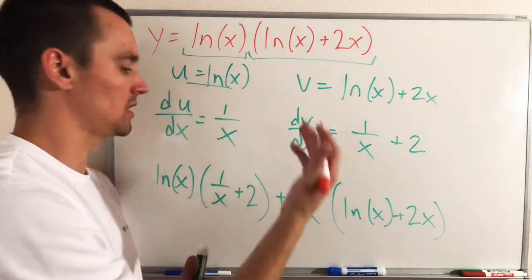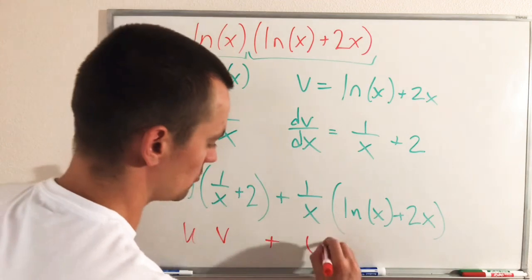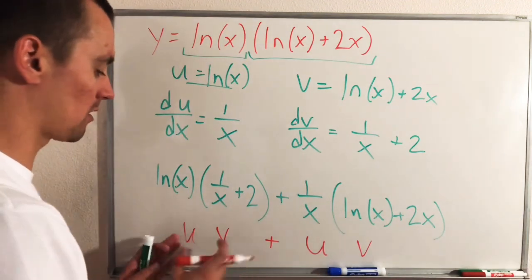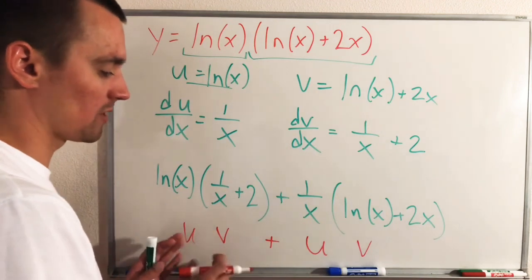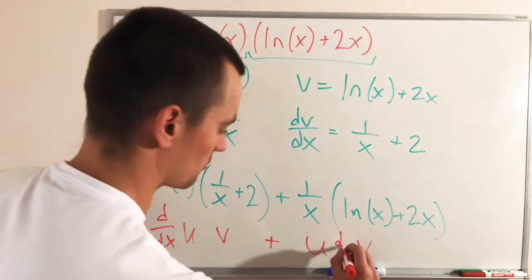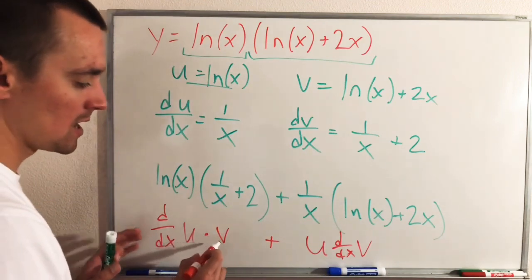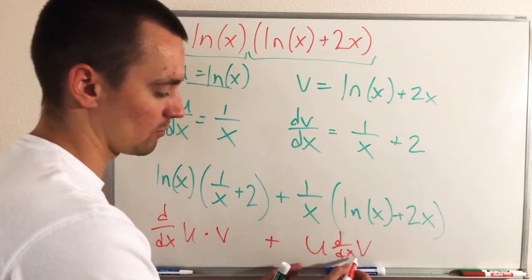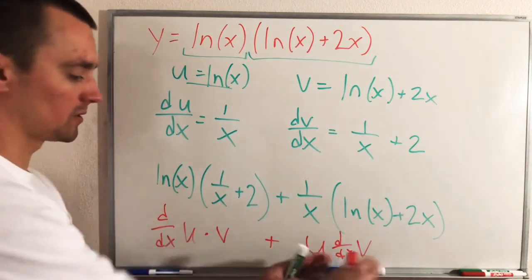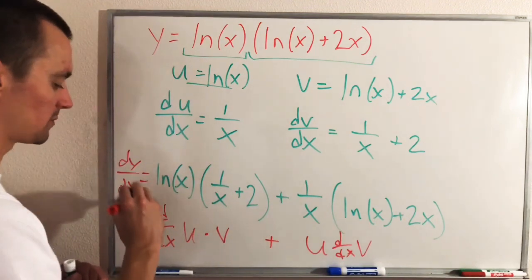Now we plug these into the product rule formula. Think of it as: u times v, written out twice, with d/dx applied to a different piece each time. So we take the original u times the derivative of v, plus the derivative of u times the original v. That gives us: ln(x) times (1/x plus 2), plus (1/x) times ln(x) plus 2x. This is the derivative of our function y with respect to x.